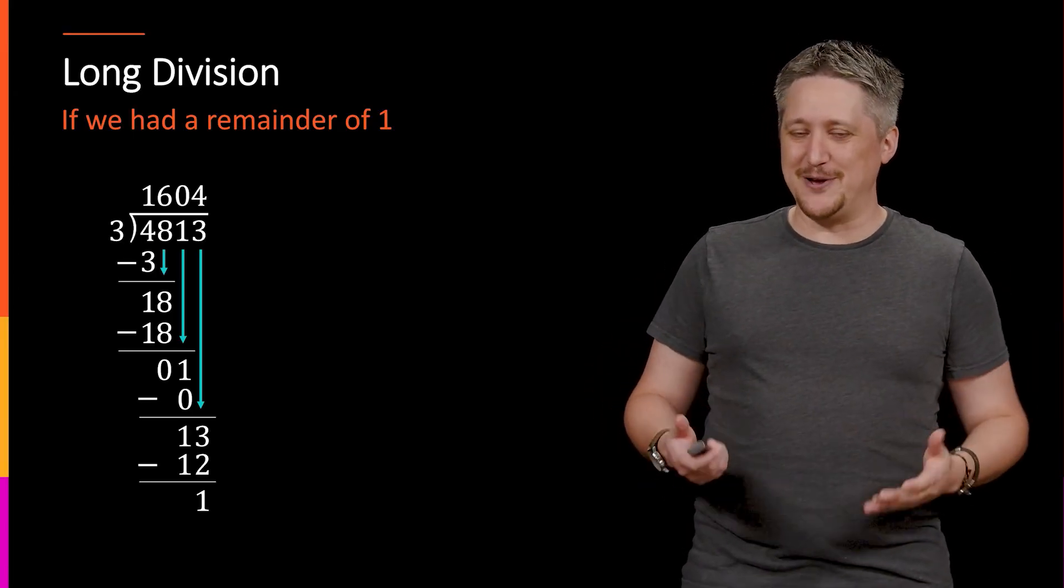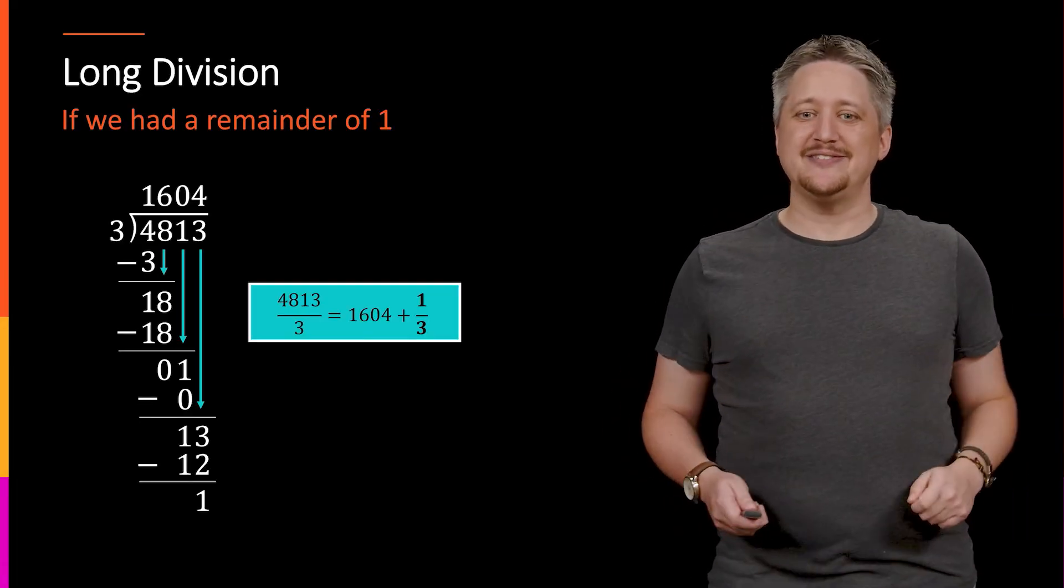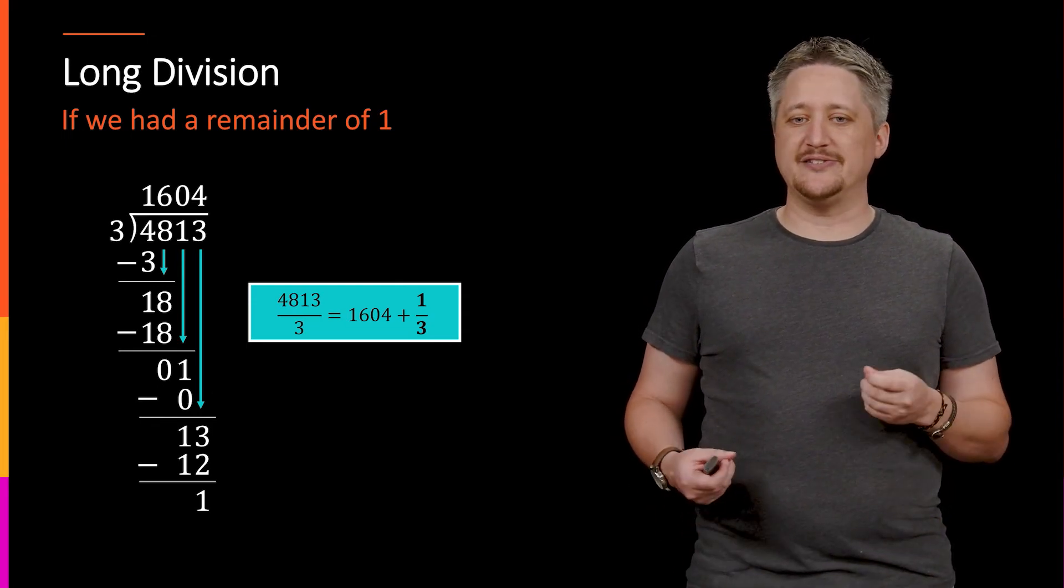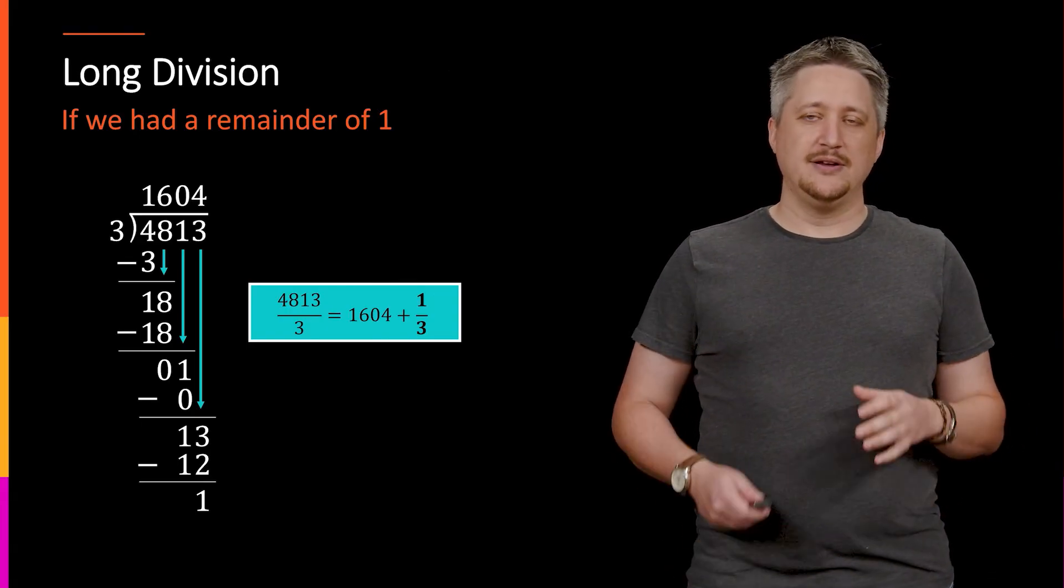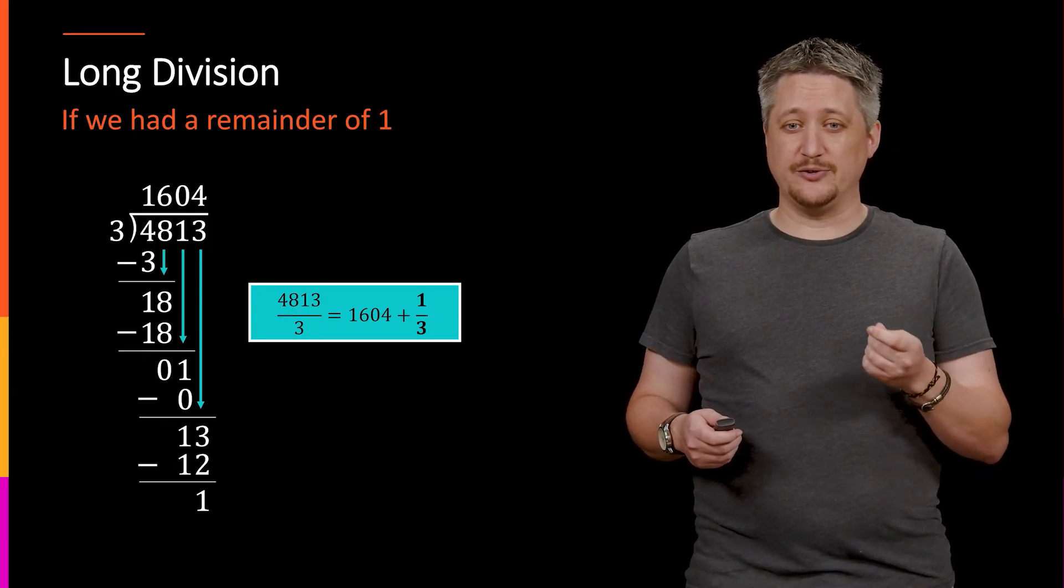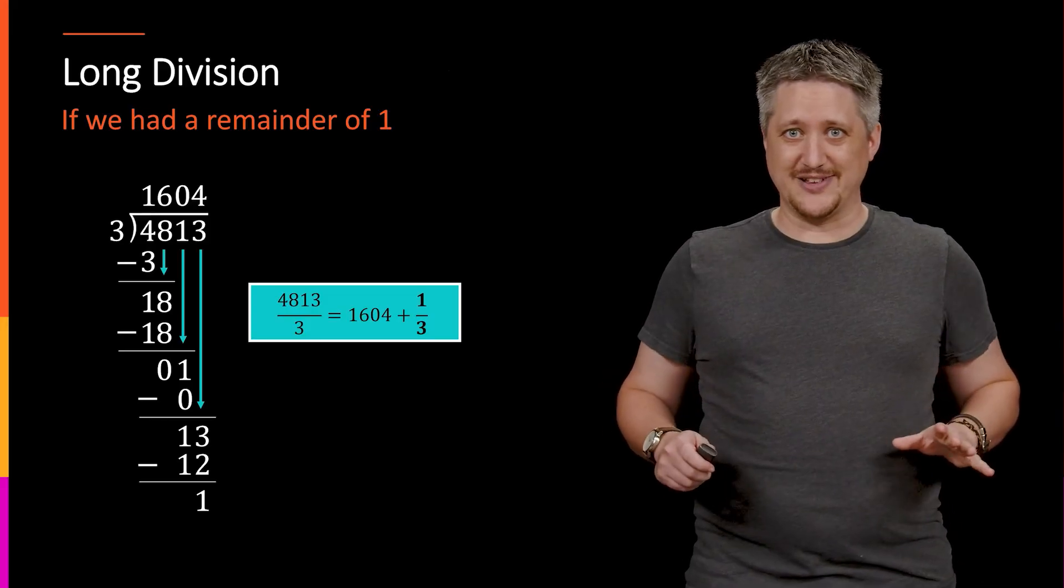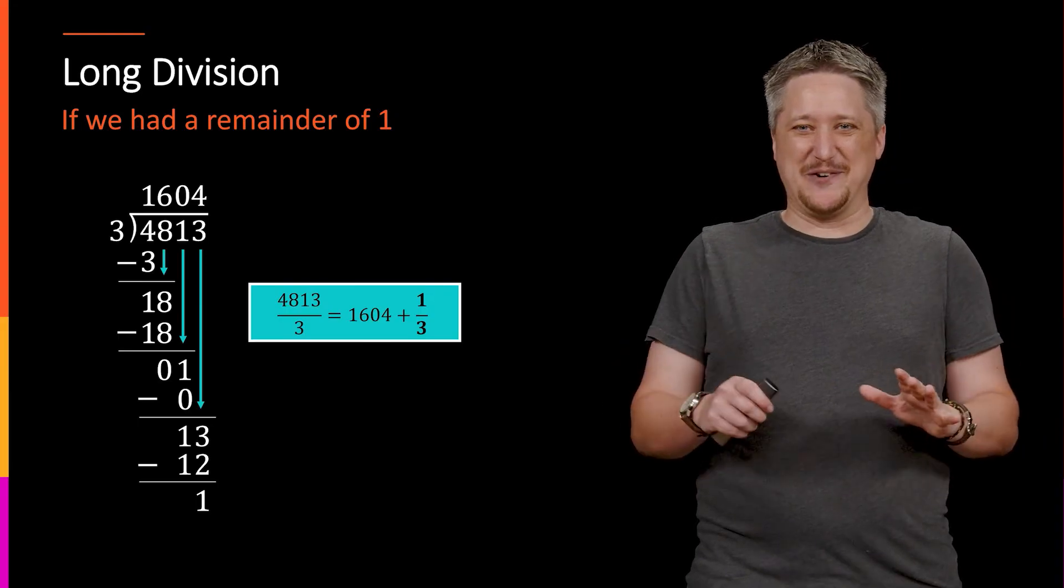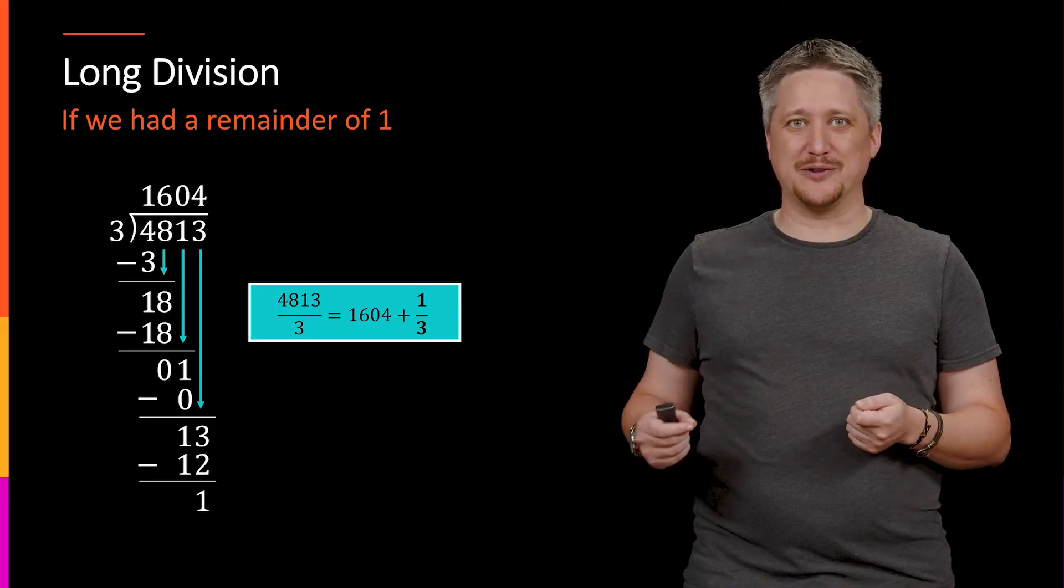But suffice it to say, fractions are almost always better for a variety of reasons. So the better way to write this is that we could say, okay, 4813 divided by 3 is really 1604 and one third. As a footnote here, you probably learned about mixed numbers where we write 1604, 1 over 3. That's terrible notation because that looks like they're being multiplied and they're not. Don't ever write that going forward from here. Always use the addition sign.